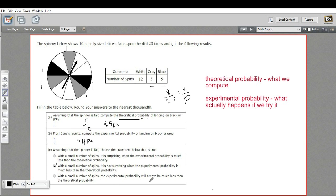With a small number of spins, the experimental probability will always be much less than the theoretical probability. Well, that's not true. It might be less. It might be more. It might be right on. We just can't predict that with any accuracy.